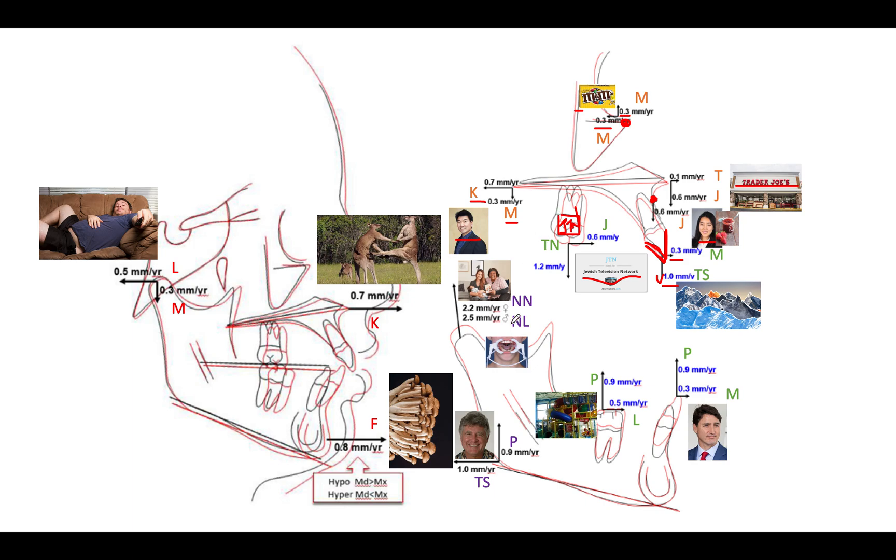And then the lower incisor erupts and goes forward at 0.9 millimeters per year, 0.3 millimeters per year. So that's going to be a PM. Here's prime minister of Canada, Justin Trudeau, probably the youngest and best looking prime minister the world has ever seen. So that's going to be a prime minister for you. You can imagine him kind of just standing on this incisor, riding some kind of wave maybe.